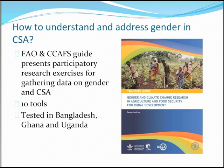To introduce the climate change guide that FAO and CCAFS have put together: this guide was designed in response to a need for more knowledge on how men and women are responding to changing climate, and to help ensure climate smart agriculture is inclusive and takes gender into account. It's based on 10 participatory tools and was tested in Bangladesh, Ghana, and Uganda. Thanks to this testing, it's gone through revision and hopefully can be expanded to include tools at the policy level as well.